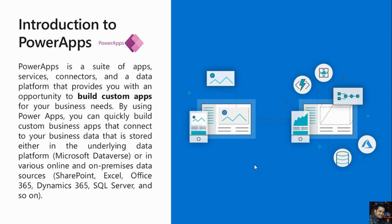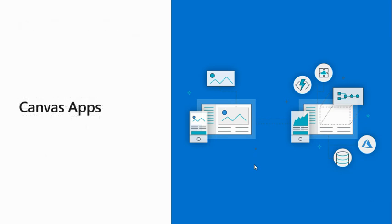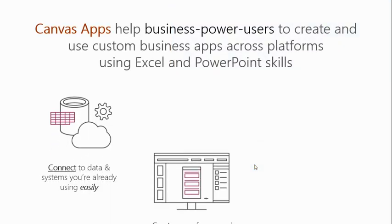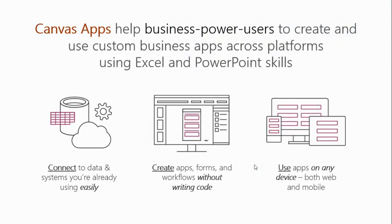You can very quickly build custom business apps that connect your business data, which can be stored either in Microsoft Dataverse or in various online or on-premise data sources — for example, Excel, Microsoft SharePoint, OneDrive, or Office 365. There are two types of apps which can be created in PowerApps: canvas apps and model-driven apps. In this video series we'll be primarily talking about canvas apps, and as we move to intermediate and advanced levels we'll cover model-driven apps as well.